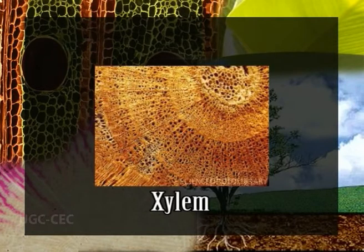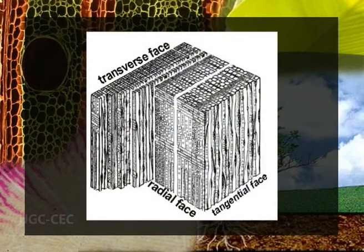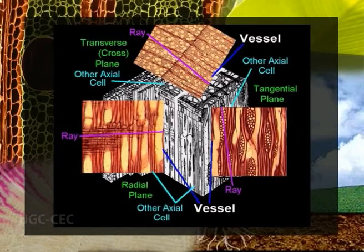Mechanically, xylem supports and anchors the plant body. Physiologically, it conducts water and other inorganic materials absorbed by roots to all living parts of the plant. The most distinctive feature characterizing the secondary xylem is the existence of two systems of elements which differ in the orientation of their longitudinal axis. One system is vertical and the other is horizontal. The horizontal system comprises the xylem rays, and the vertical or axial system comprises the tracheary elements, fibres, and wood parenchyma.